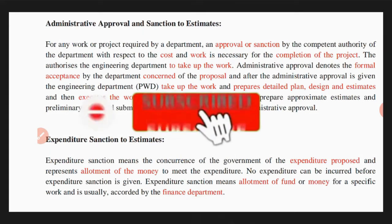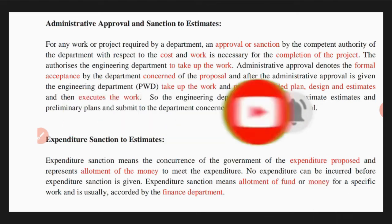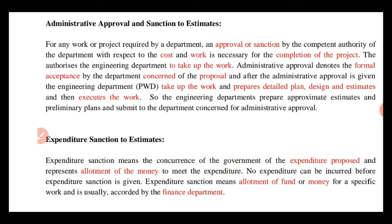Next, expenditure sanction. Expenditure sanction means the concurrence of the government on the expenditure proposed and represents the allotment of money to meet the expenditure. No expenditure can be incurred before expenditure sanction is given. Expenditure sanction means allotment of fund or money for a specific work, and is usually accorded by the finance department.